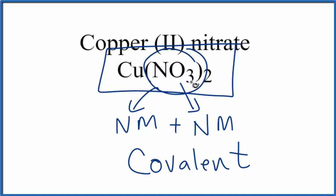This is Dr. B, answering the question whether copper(II) nitrate is ionic or covalent. It's overall ionic with covalent bonds within the polyatomic ion. Thanks for watching.